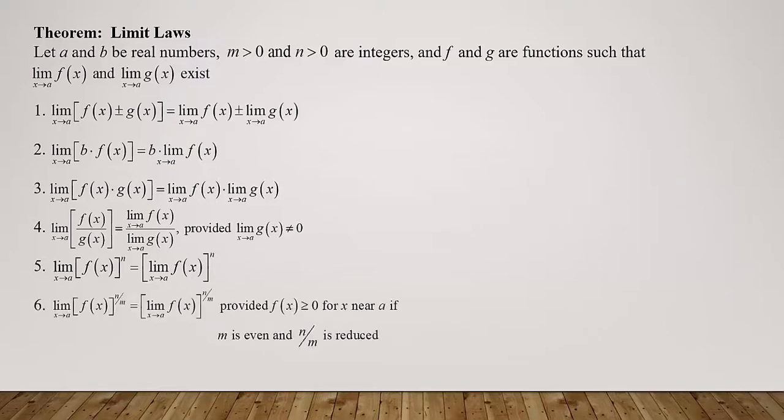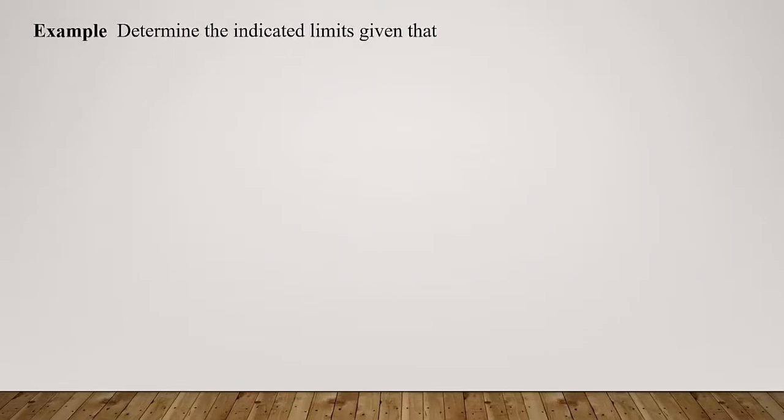Law six handles a rational exponent: the limit as x approaches a of f(x)^(n/m) equals [the limit of f(x)]^(n/m), provided f(x) ≥ 0 for x values close to a when m is even and n/m is in reduced form.